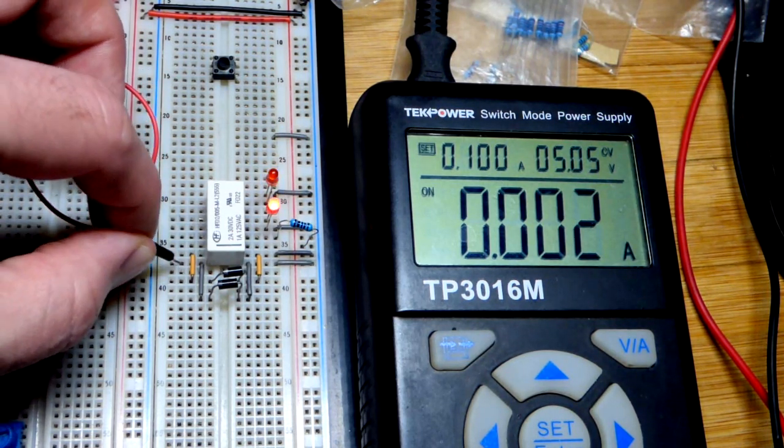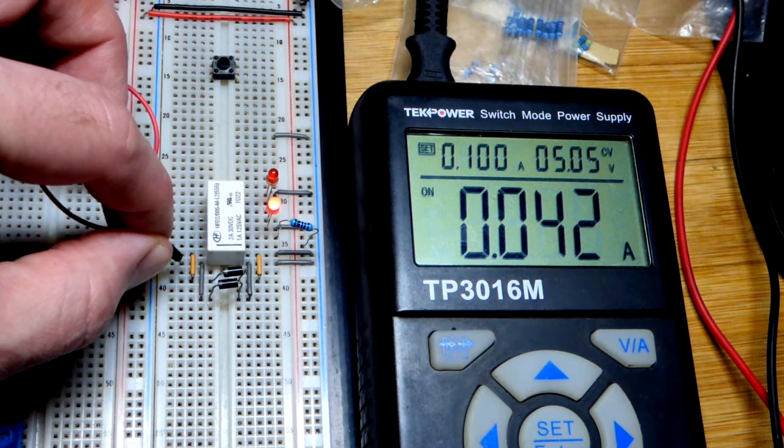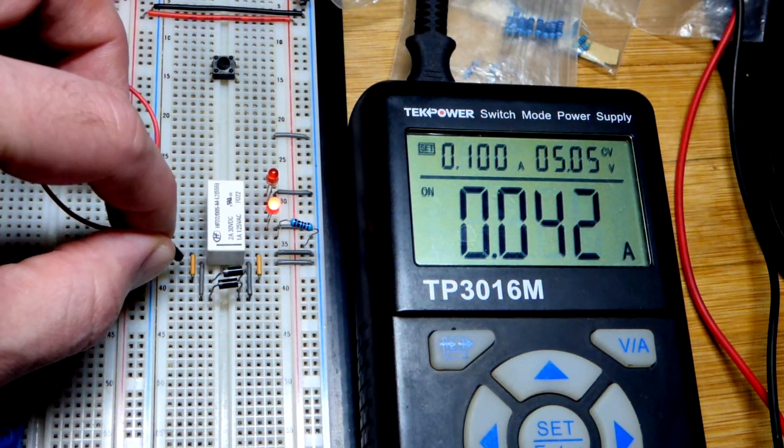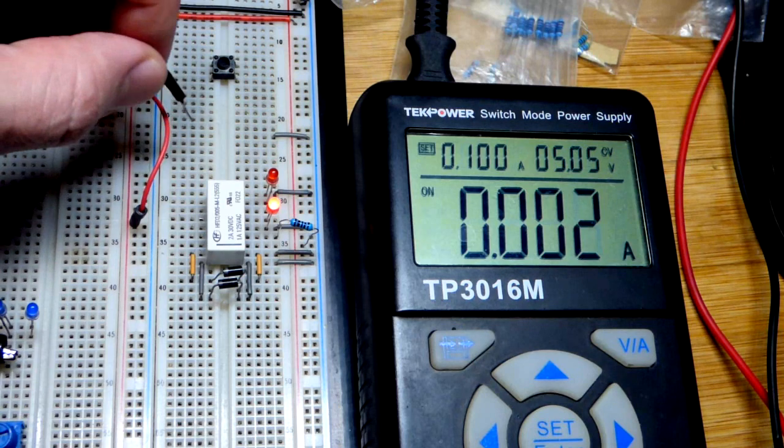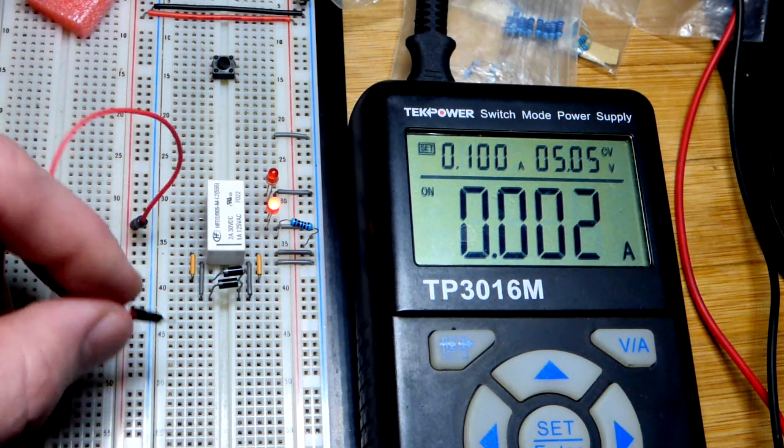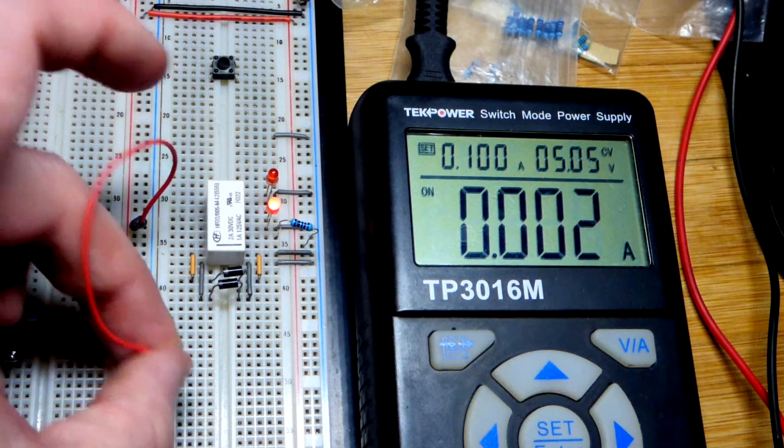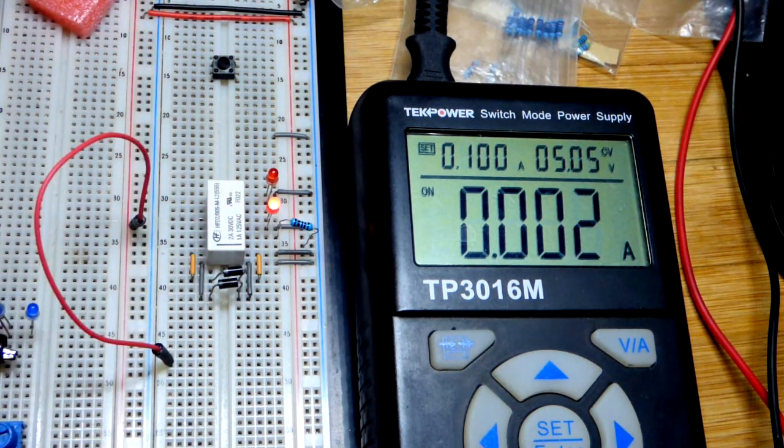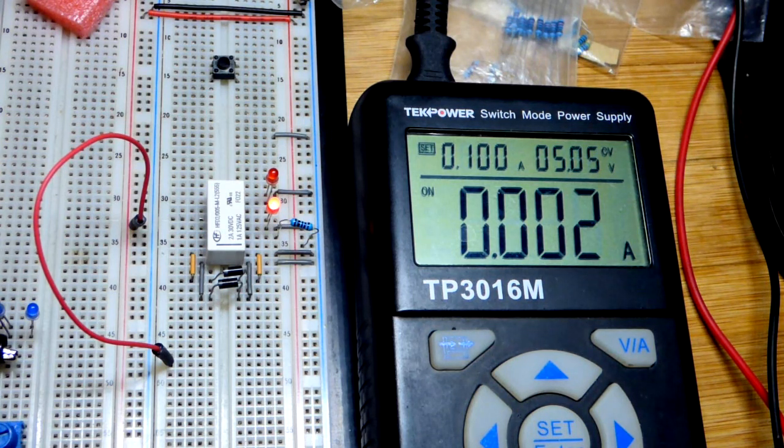And then same thing when we switch it to the other position right there. So the current has to go through the coil, and as long as I'm energizing it. But once I remove it, now there's no current going through the coils. But the relay is locked into position. It's going to stay there until we give it another signal.